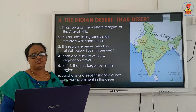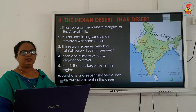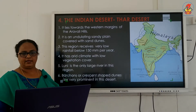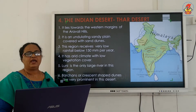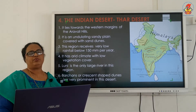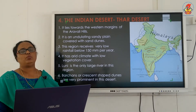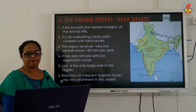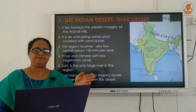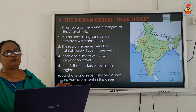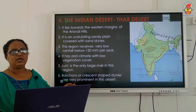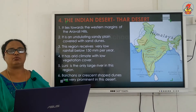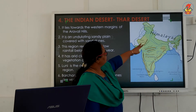The Thar desert has very scanty rainfall, leading to an arid climate. Luni is the only large river in this region. A prominent feature of the Thar desert is crescent-shaped dunes, also known as barchans.